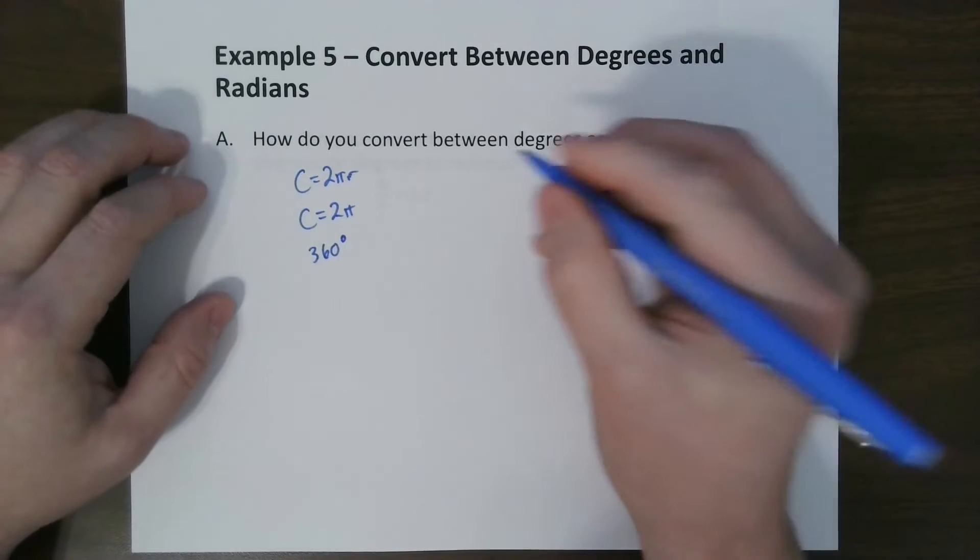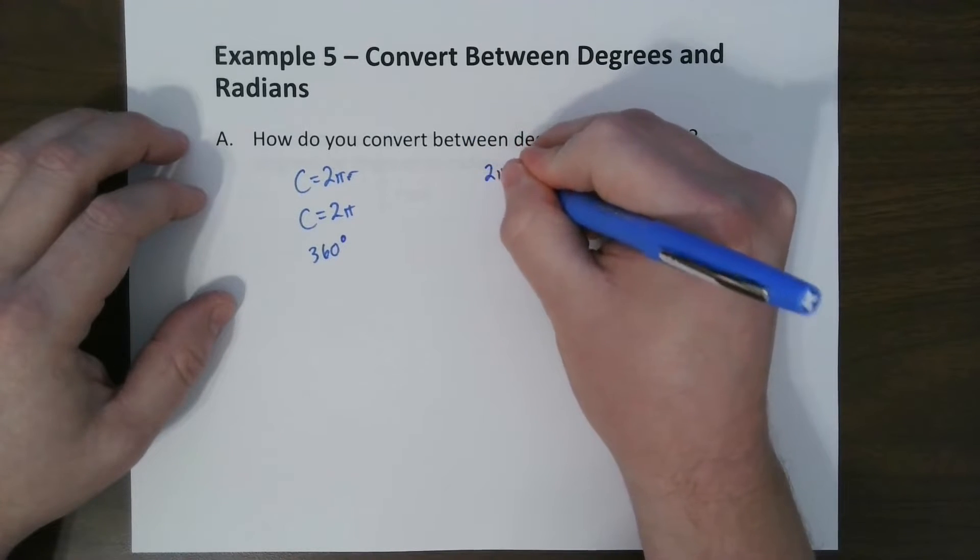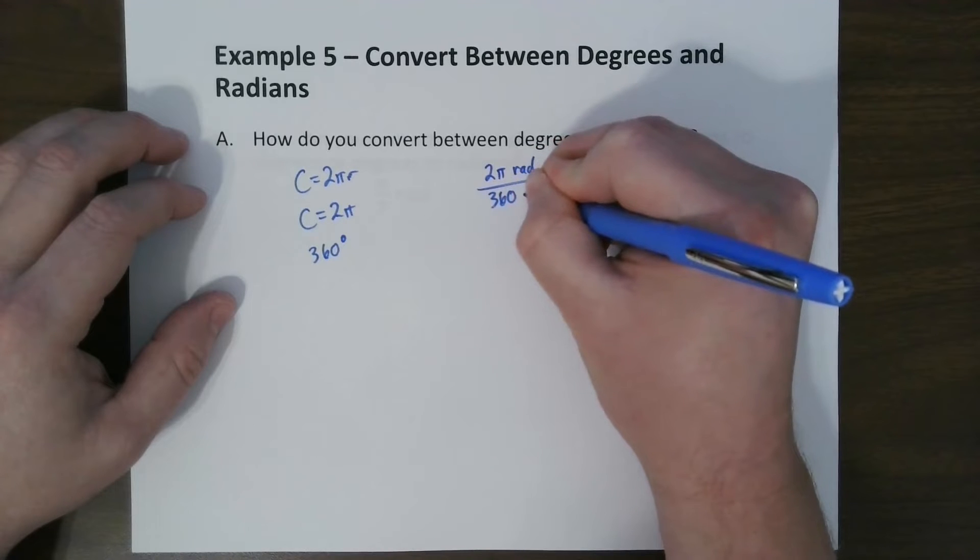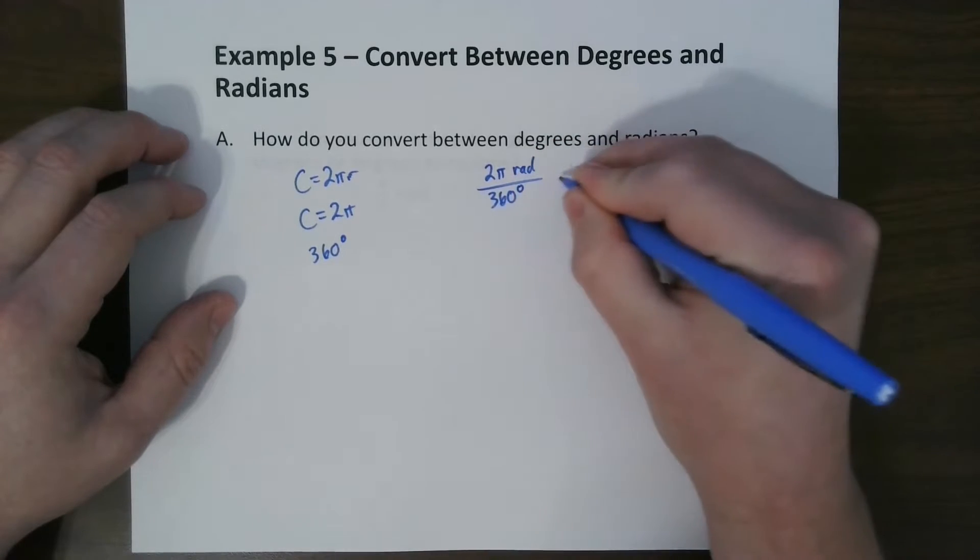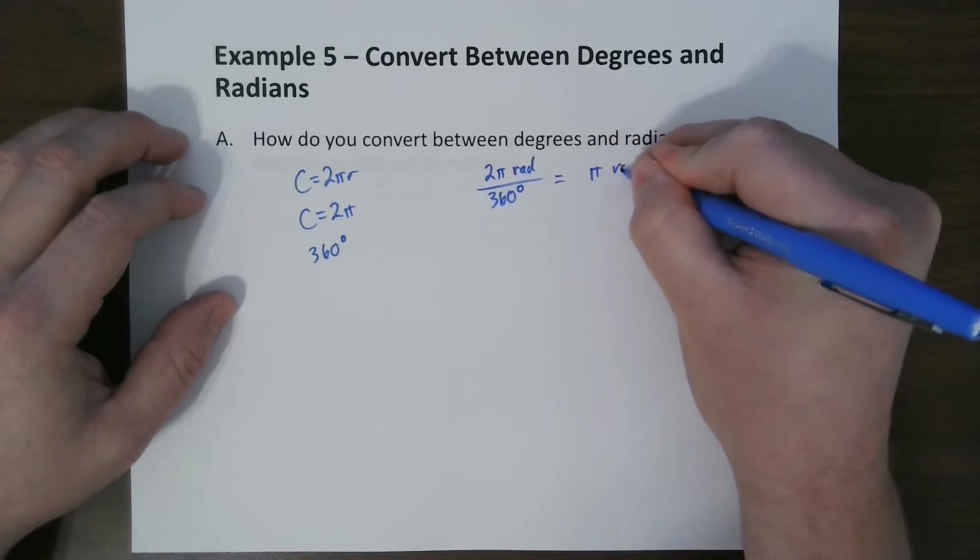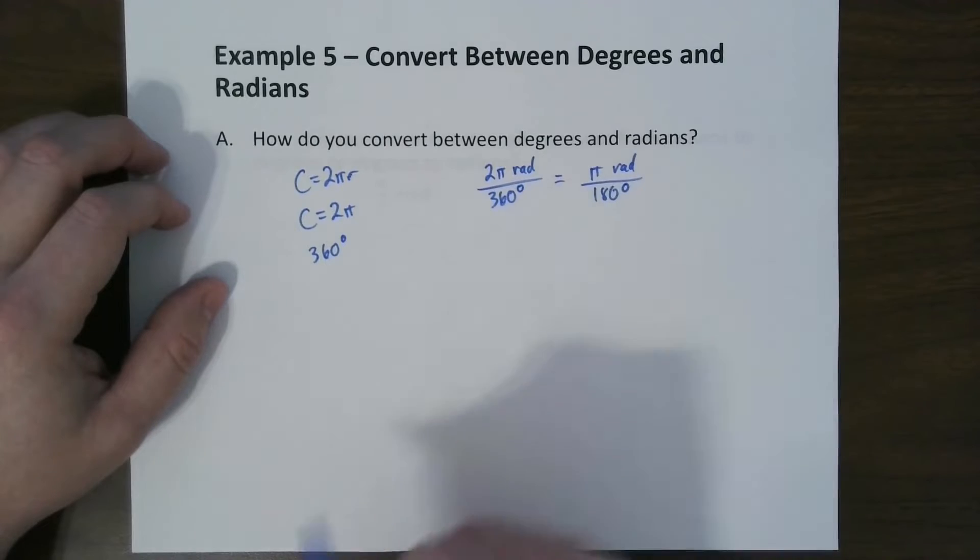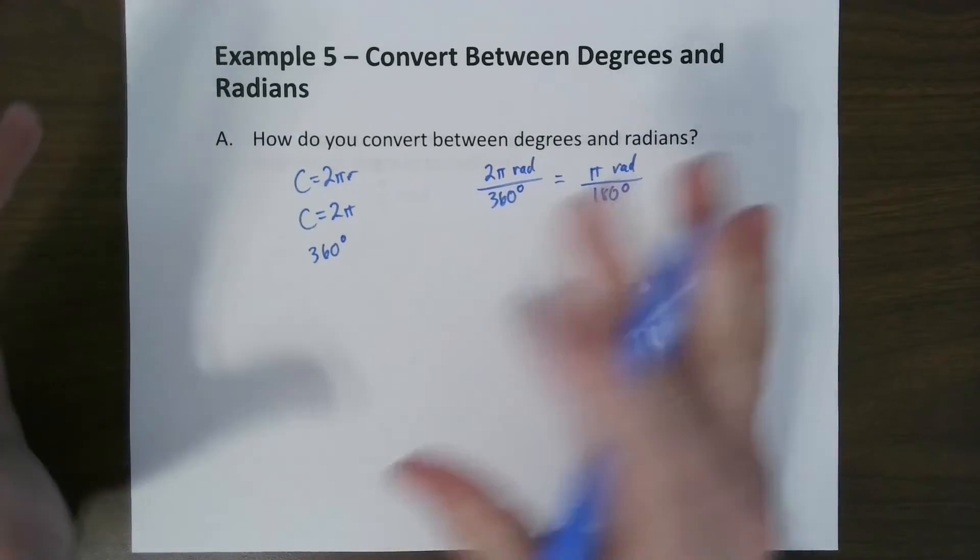So from there, we can get a ratio. So if we have 2 pi radians for 360 degrees, we can reduce this as pi radians over 180 degrees.